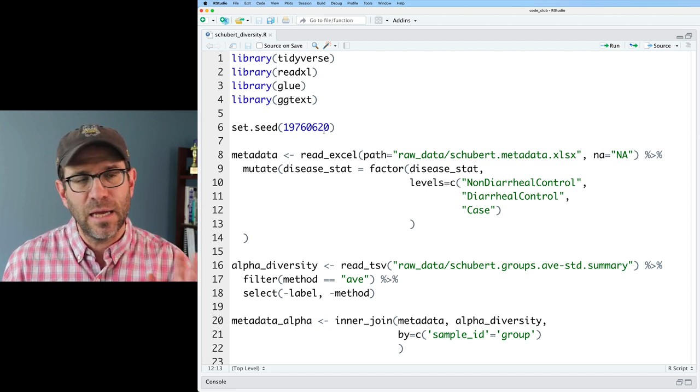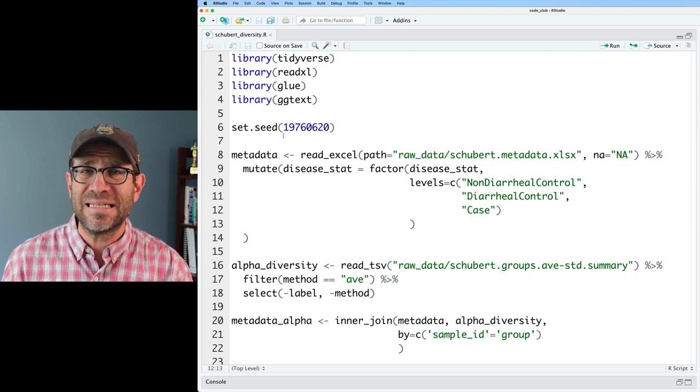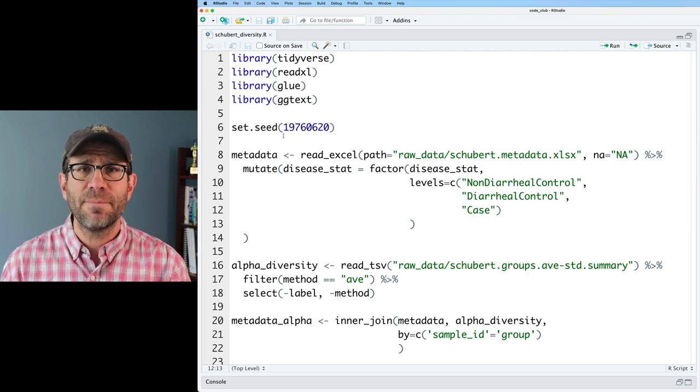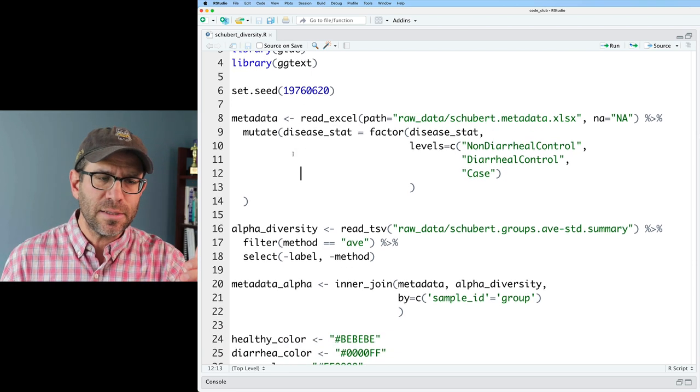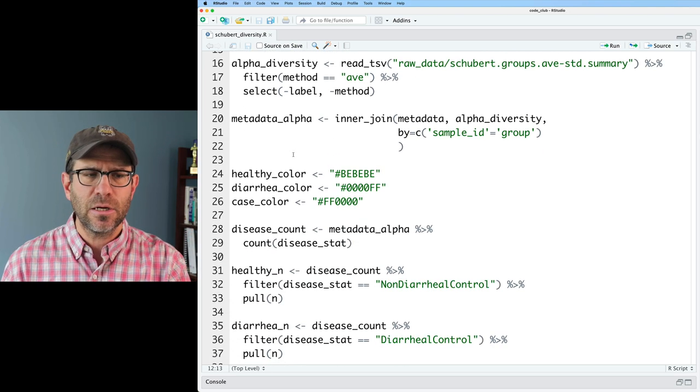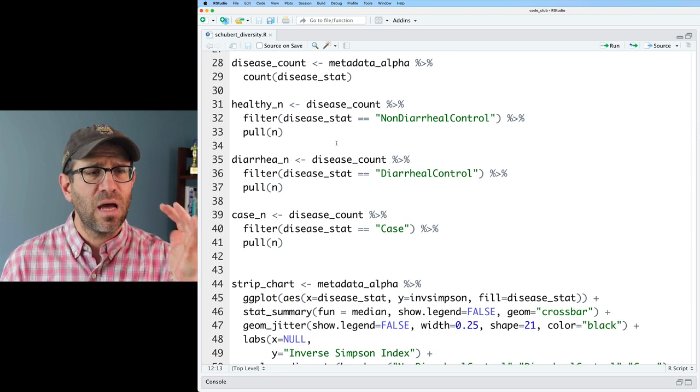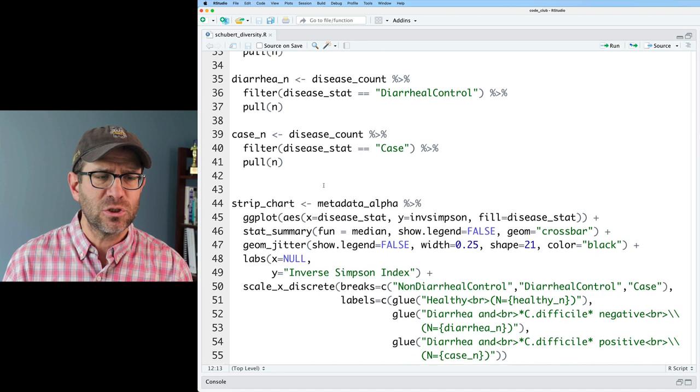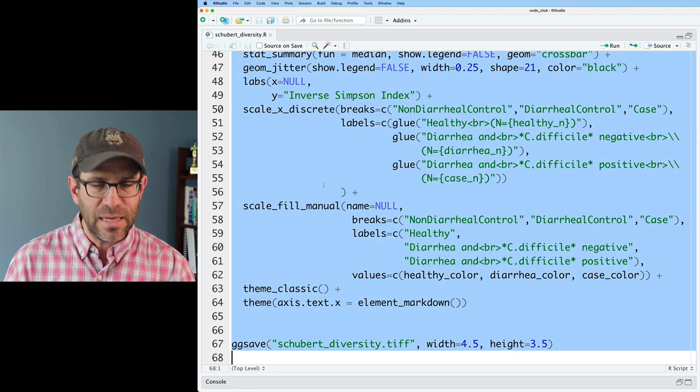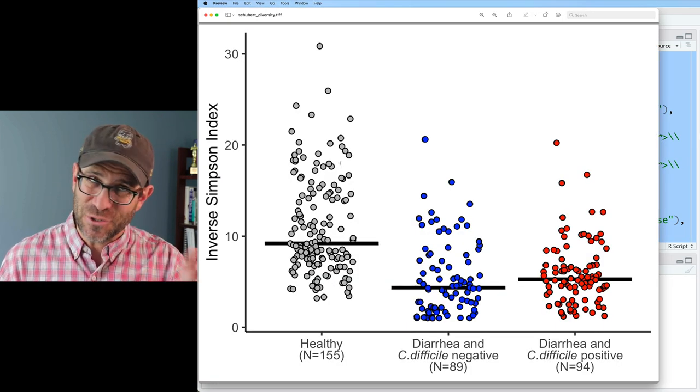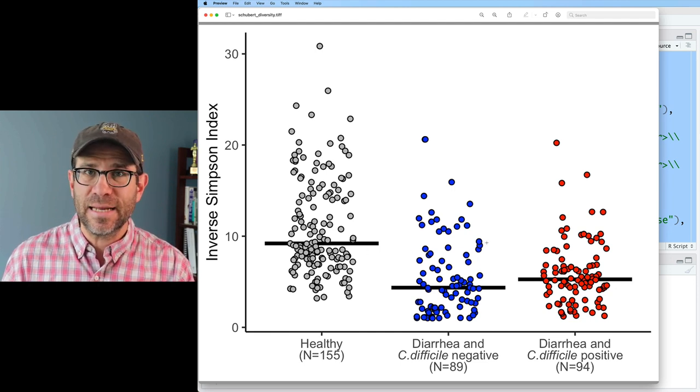Let's look at the code that we have here. We're loading a handful of libraries that come from the Tidyverse. We're setting a random number generator seed here on line six because we are doing a jitter plot and the x-axis position within each cloud is randomly determined. We read in the metadata, the alpha diversity data, we join it all together. We've got some styling information here for different types of colors, as well as counts of how many patients we had in each of these groups. Then we have the code to generate the strip chart, and then we finally save all that into a TIFF.